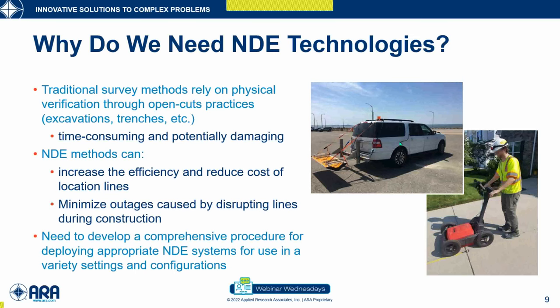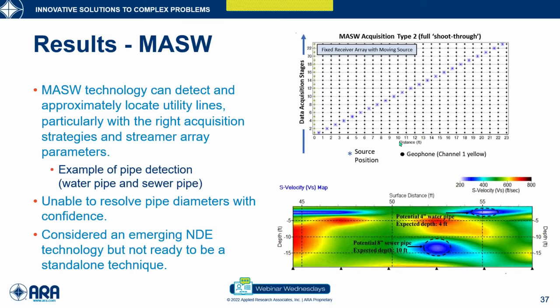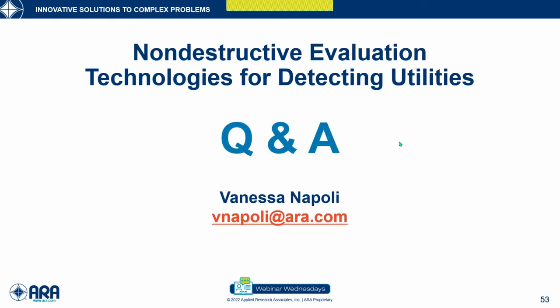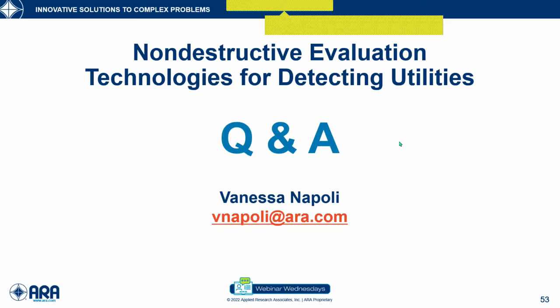Richard asks: what is the range of high-speed scanning? There are two ways to interpret that. In terms of speed, you should keep a relatively low pace when possible—around 45 miles per hour or so. I can follow up more with Bridge Diagnostics about the maximum speed of their 3D radar system. In terms of frequency range, the 3D radar uses an ultra-wideband frequency spectrum, really between 200 MHz and 3 GHz—a very wide frequency spectrum, which helps when looking at a range of depths and utility types.